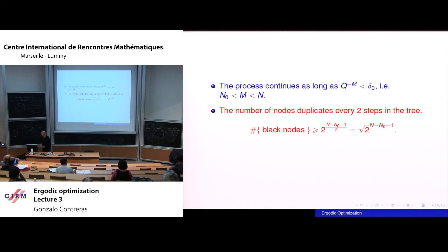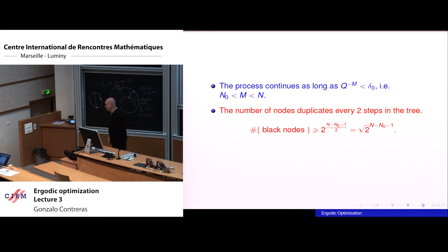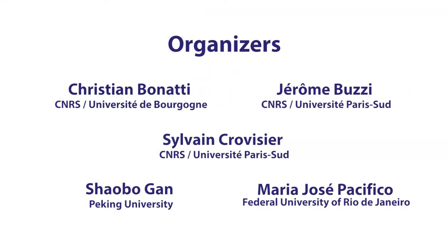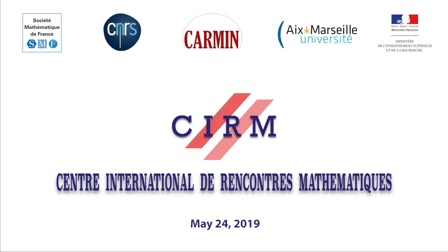My first approach was looking at the dimension of the diagonal of the dynamical signal — this is like an epsilon distance to a diagonal of x by x. Thank you very much.